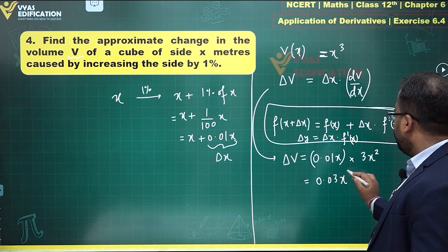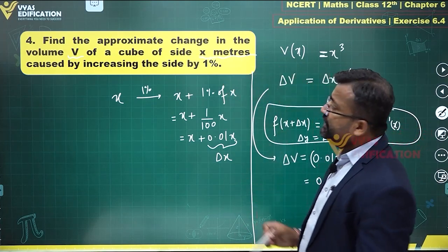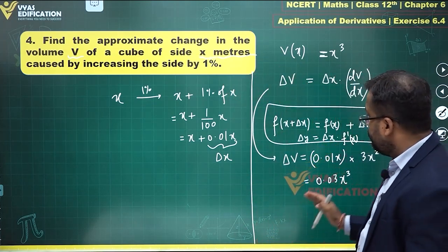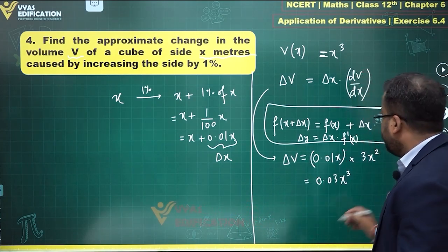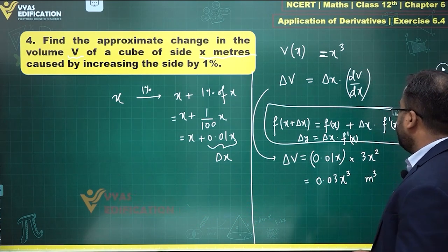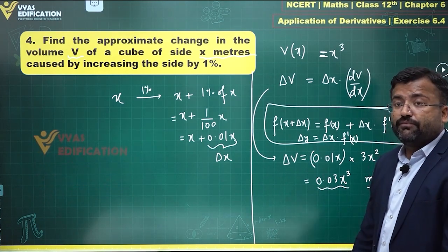This becomes 0.03x³. And mind you, x is measured in meters and the units are consistent. So change in volume, change in volume will be, the unit of volume will be used over here. And what's that? That is meter cubed. That's the value and that's the unit over here. That's the final answer for this question.